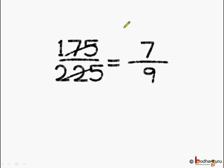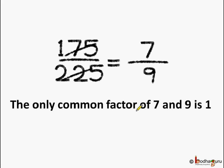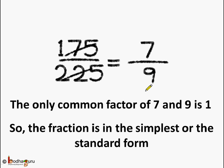So we get the reduced fraction which is 7 by 9. Now, is 7 by 9 the simplest form? Let us find the factors of 7 — they are 1 and 7. What are the factors of 9? 1, 3 and 9. Between 7 and 9, the only common factor is 1. So we can say 7 by 9 is the simplest form of the fraction 175 by 225. When the fraction is in its simplest form, we also say that the fraction is in its standard form.